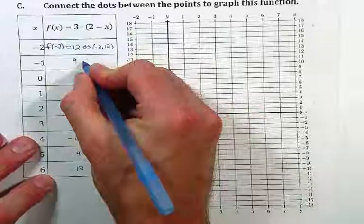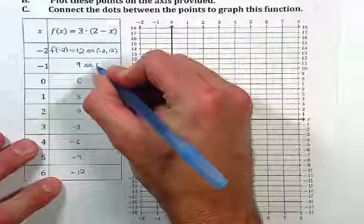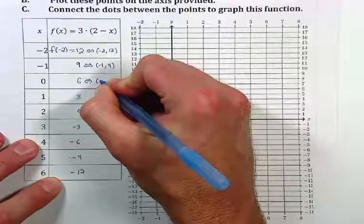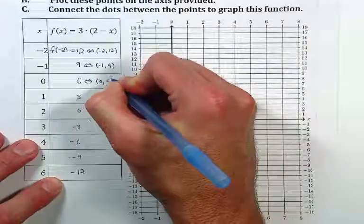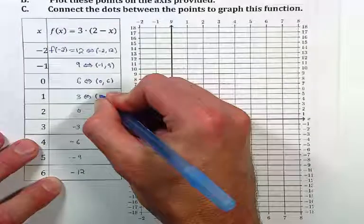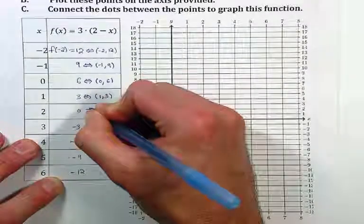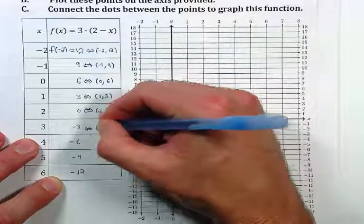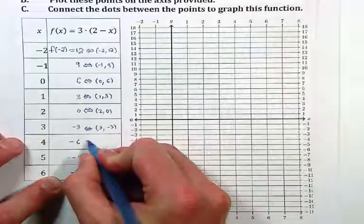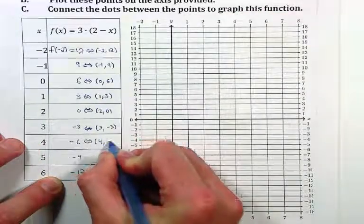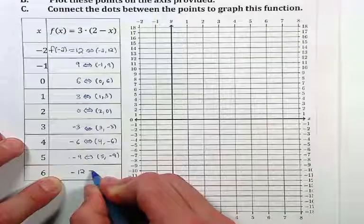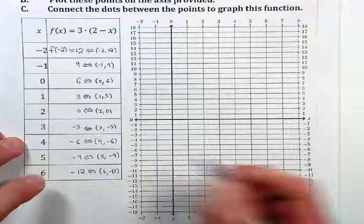I'm going to encourage each of us, you and me, when we get our input output pairs, let's go ahead and write them as ordered pairs. This will be super helpful as we learn to graph the functions that we're working with. Here I've got the input 3, negative 3. For input 4 produces output negative 6. Input 5 produces output negative 9. And input 6 produces output negative 12.